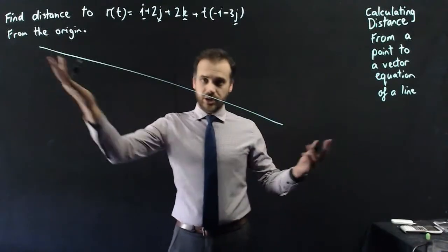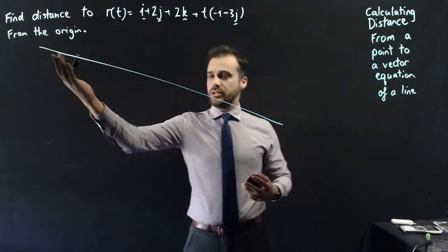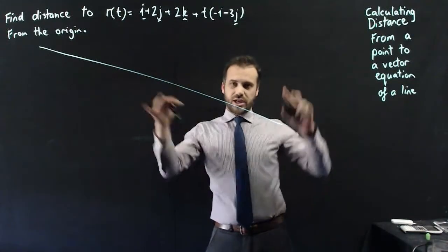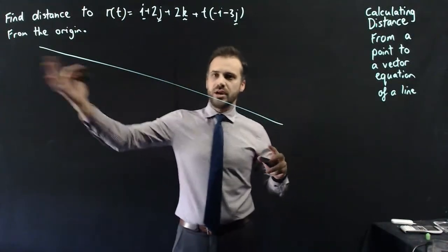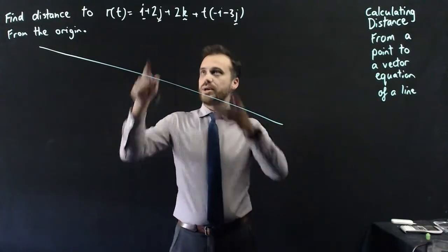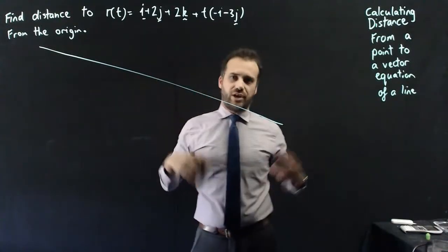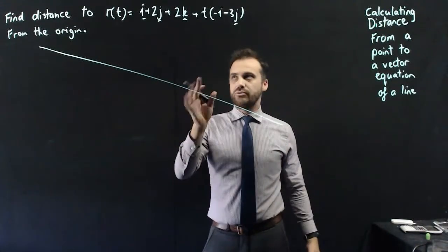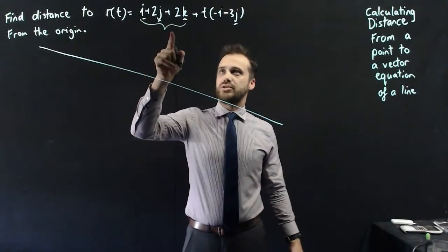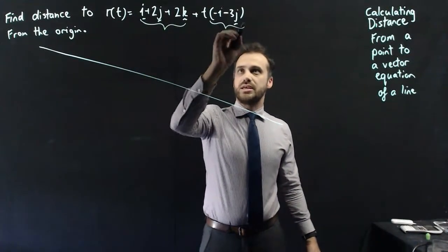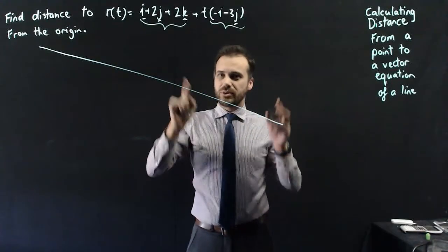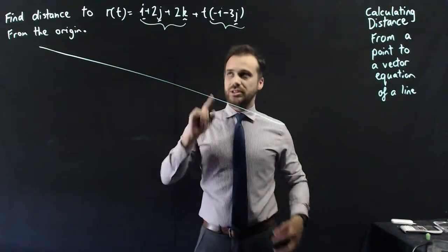A vector equation of a line is just this — it's a line. This line is moving through three dimensions in the i, j, and k components. I've just drawn it moving in an arbitrary direction. But I really want you to understand what this i plus 2j plus 2k is, and also what a vector equation actually is.